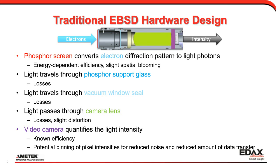These are the parts inside the system that you usually don't see, but they are very important for understanding the advantages and disadvantages of different camera systems. In the traditional method, electrons come in from the sample and hit a phosphor screen, converting them to light. That has an energy-dependent efficiency, and there can be slight spatial blooming or blurring from the actual location of incidence. That's the way phosphors work.